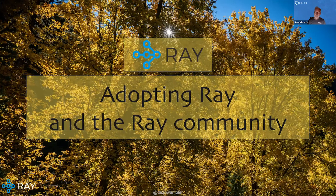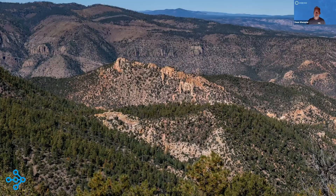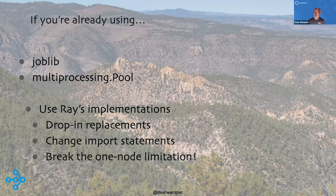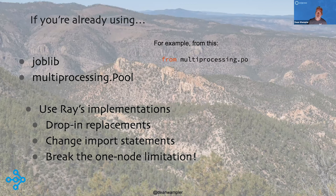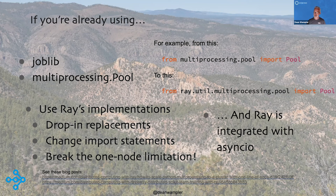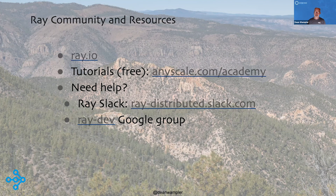If you're interested in learning about Ray, if you're already using multi-processing or multi-threading libraries like joblib or multiprocessing.pool in Python, there are drop-in replacements written in Ray where you just change the import statement and now you're actually scaling up to a cluster. It's a nice way to get immediate benefit while using libraries you already know. If you know async.io, it also integrates nicely with Ray. Go to ray.io to find out everything about Ray, blog posts, and all kinds of stuff. I wrote most of the tutorials at anyscale.com/academy, which are freely available on GitHub.